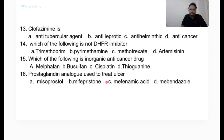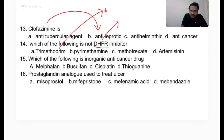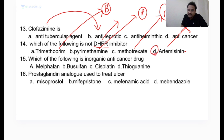Clofazimine is an anti-leprotic drug along with rifampicin, dapsone, and chaulmoogra oil. Which of the following is NOT a DHFR inhibitor? Trimethoprim inhibits dihydrofolate reductase in bacteria. Pyrimethamine inhibits DHFR in protozoa like Plasmodium. Methotrexate inhibits DHFR in mammals. Artesunate is NOT a DHFR inhibitor — it is an endoperoxide-derived free radical generating drug used to treat malaria.